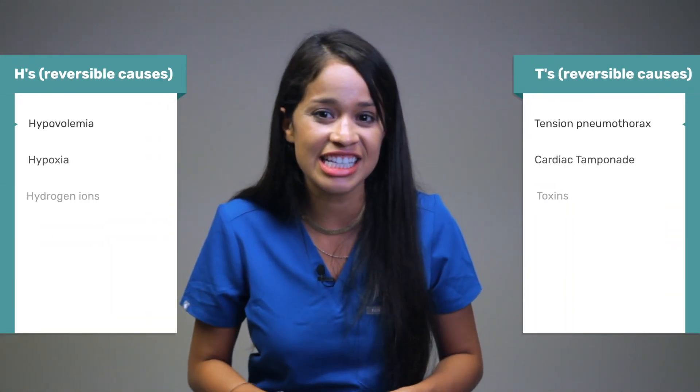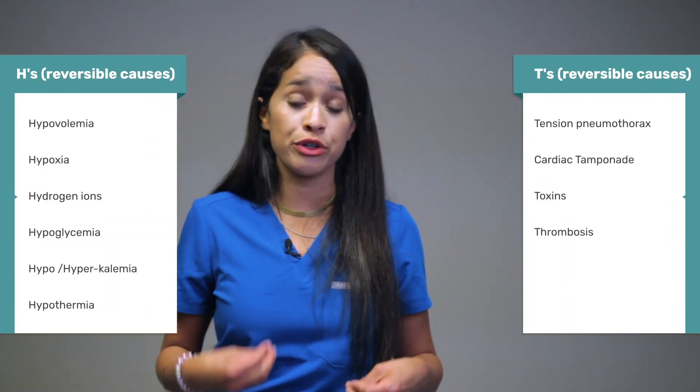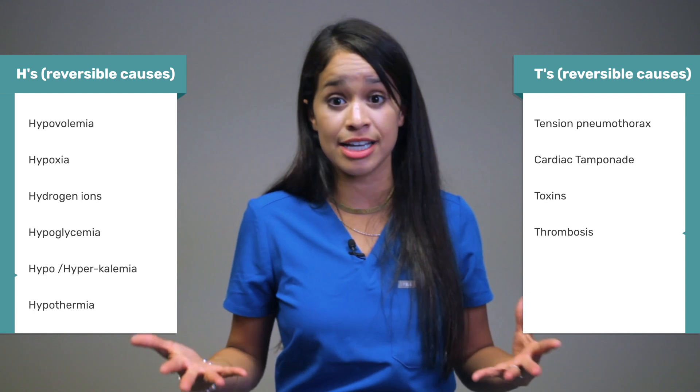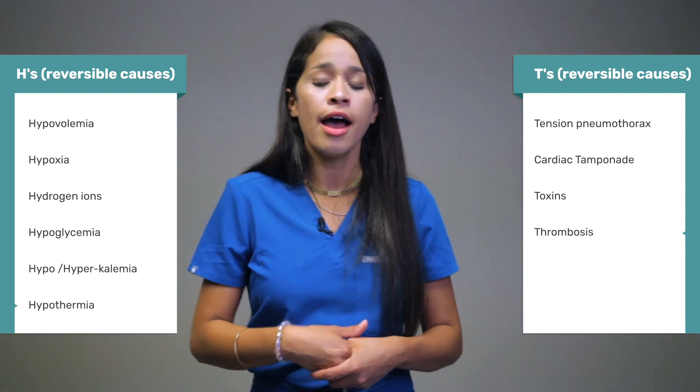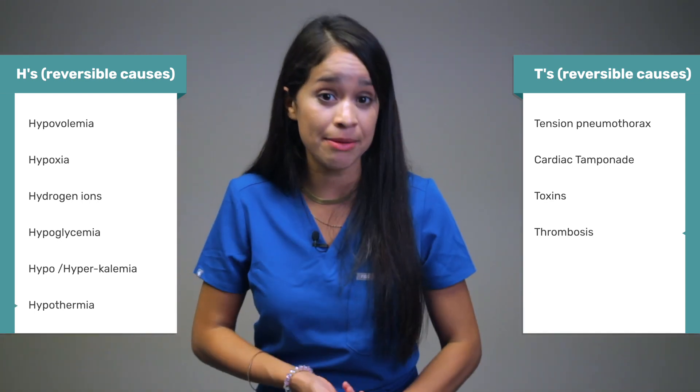Hypoglycemia is one of those H's and T's — your reversible causes. It's very important to review your H's and T's, as these will be discussed during a code. This includes hypovolemia, which can be treated with volume — so fluids.